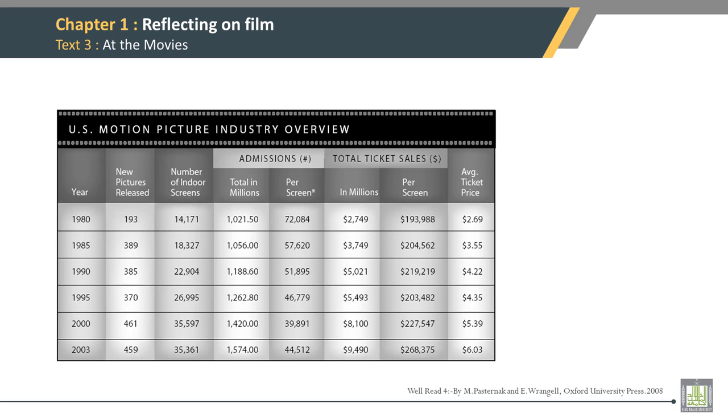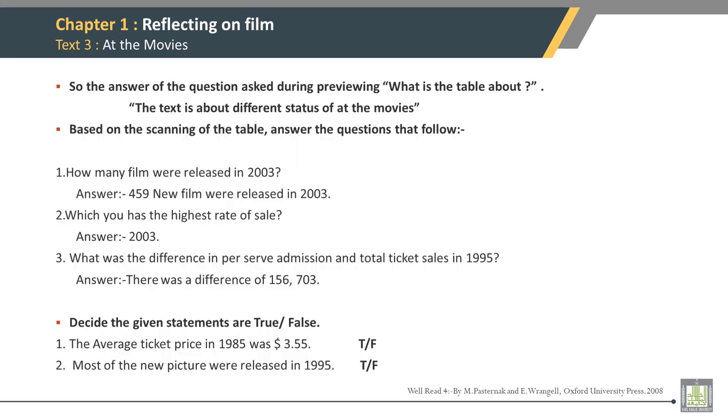US Motion Industry Overview. The table shows admissions and total ticket sales. So the answer to the question asked during previewing "What is the table about?" is: An overview of US Motion Picture Industry. Based on the scanning of the table, answer the questions that follow.